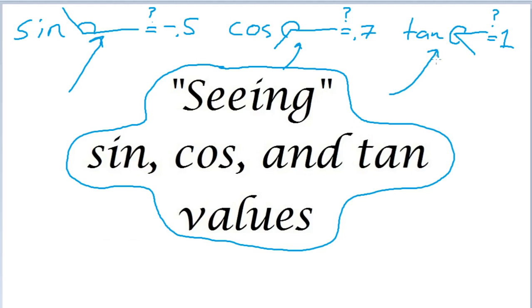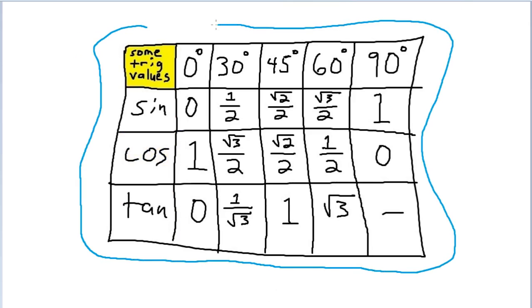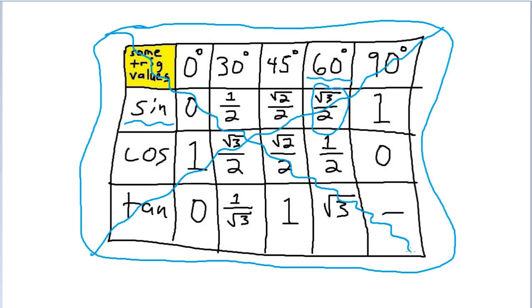That's what this video is about — developing the intuition for just seeing an angle and knowing what sine of that is going to be. We're not going to be looking at tables like this, that are well worth memorizing, from which you can discern that the sine of 60 degrees is the square root of 3 over 2. We're only interested in having a general feel for what's possible and what's not, and we're not going to be worrying about decimal places or square roots.